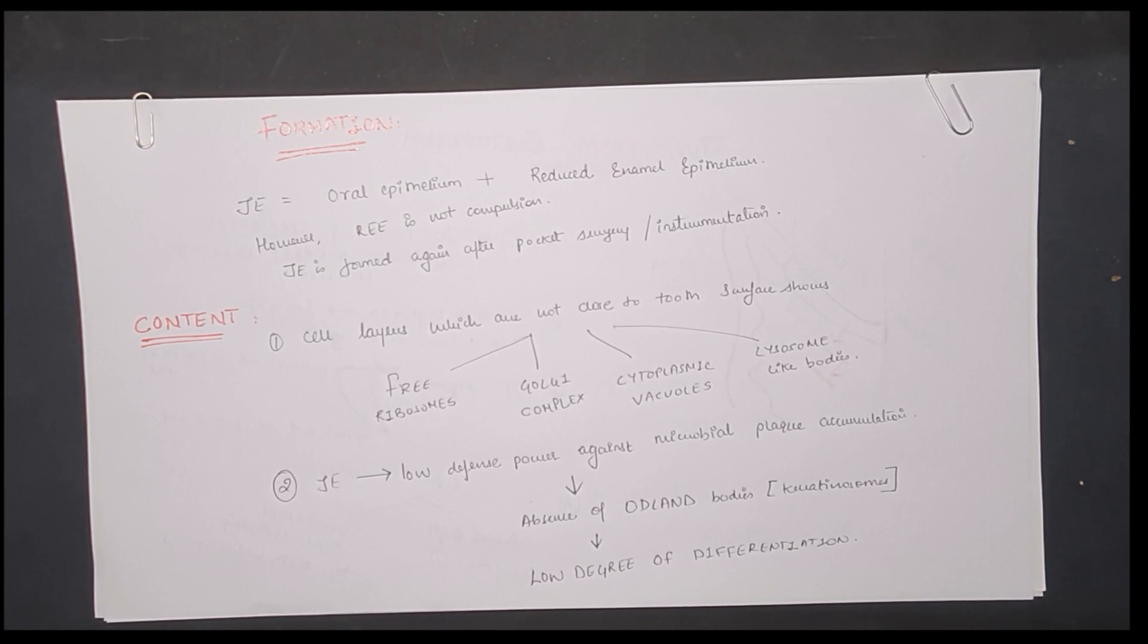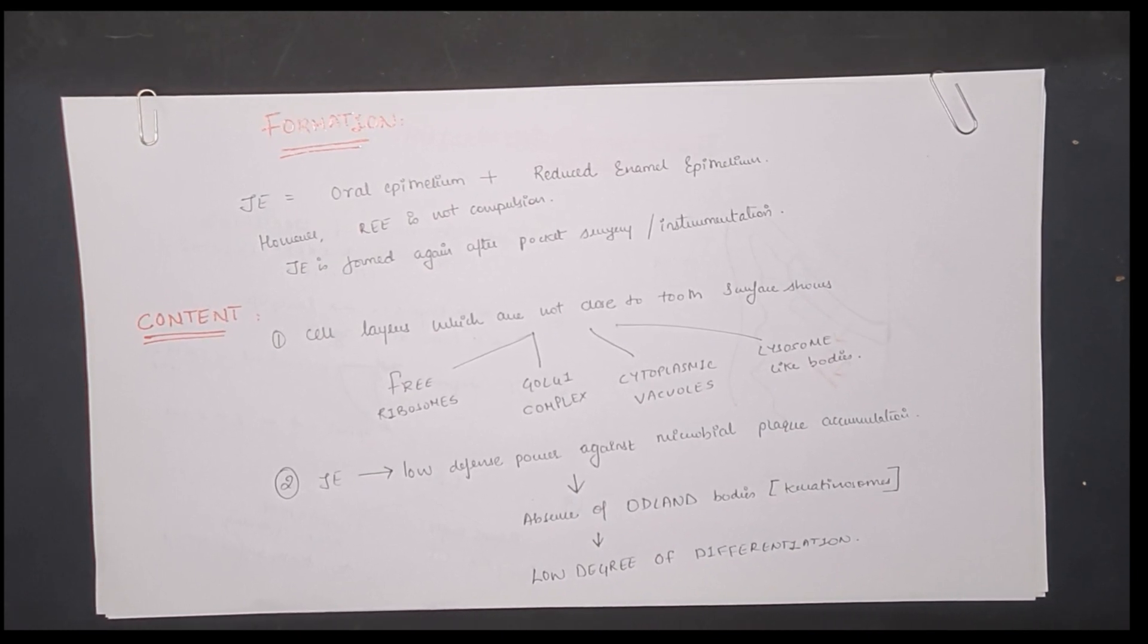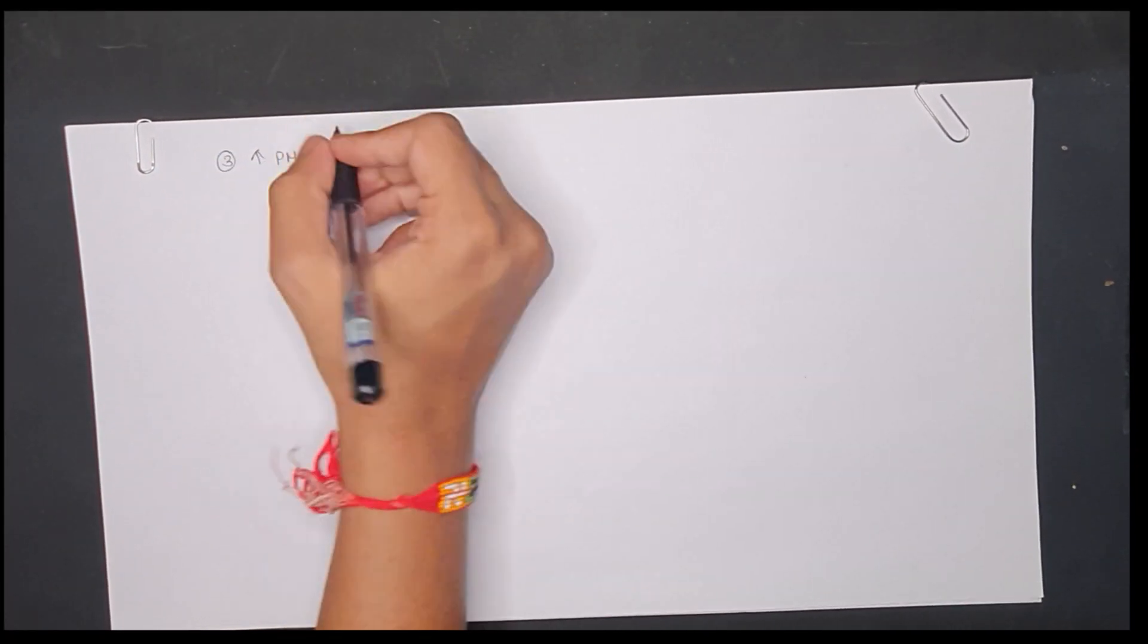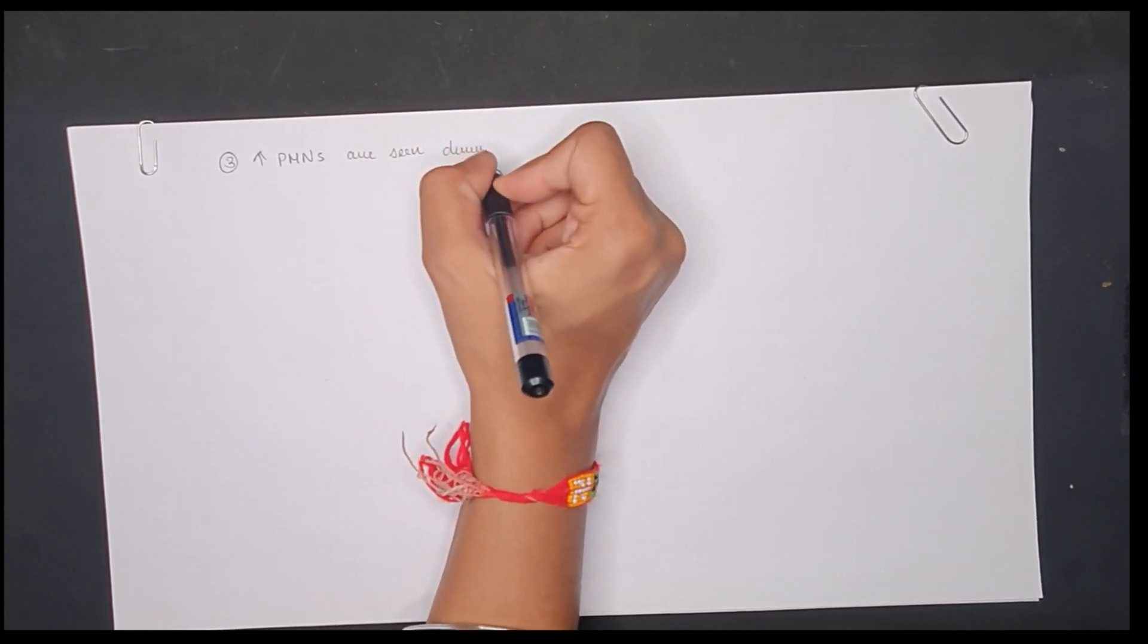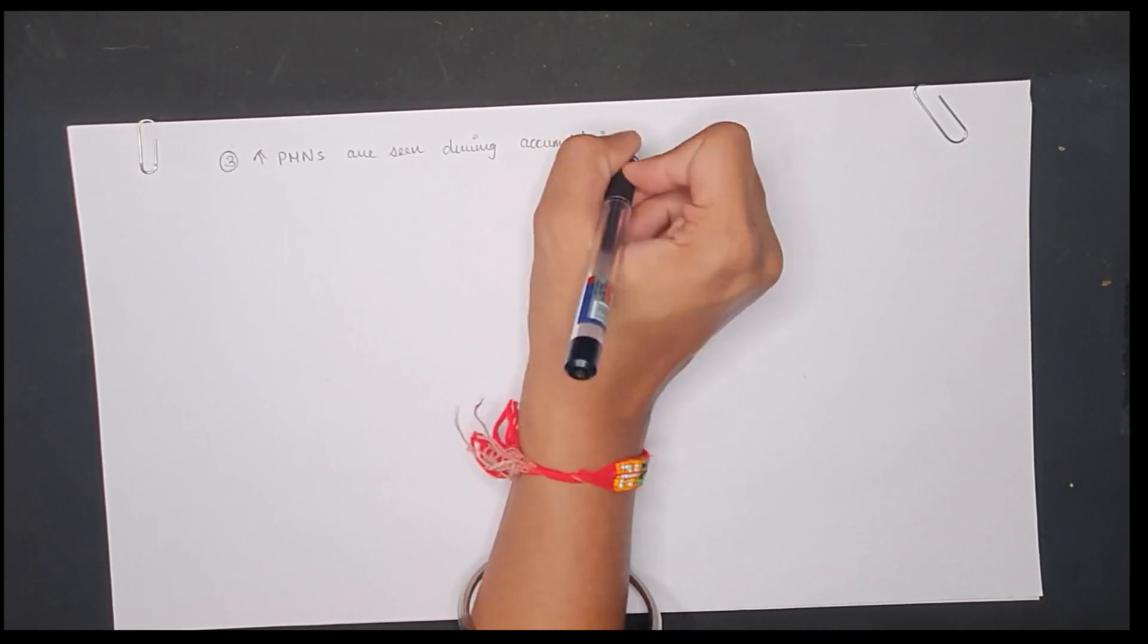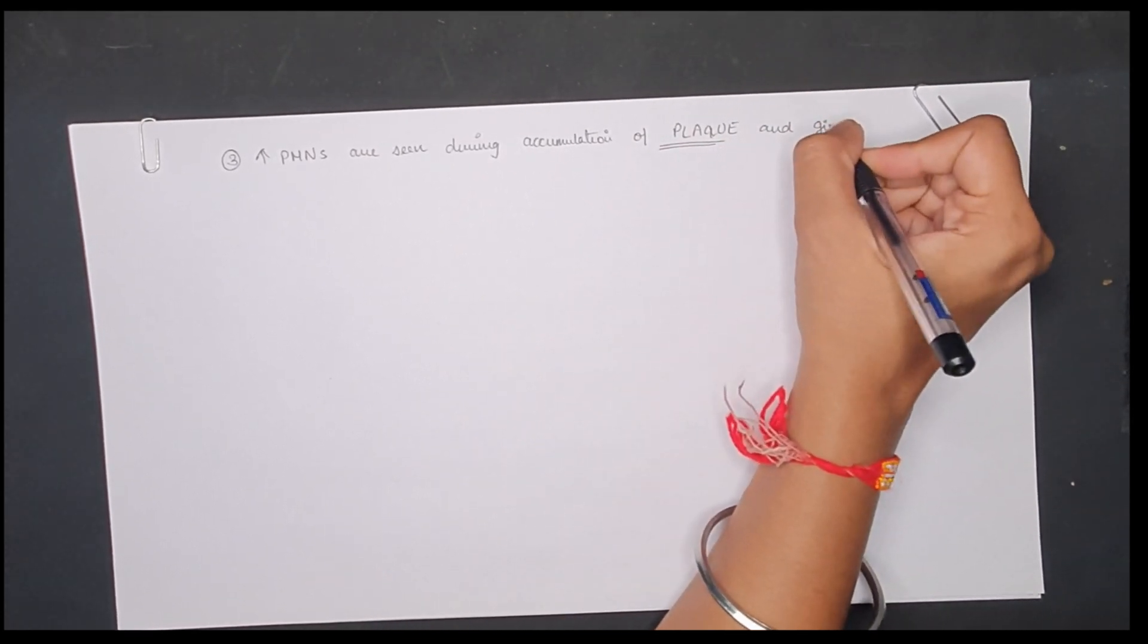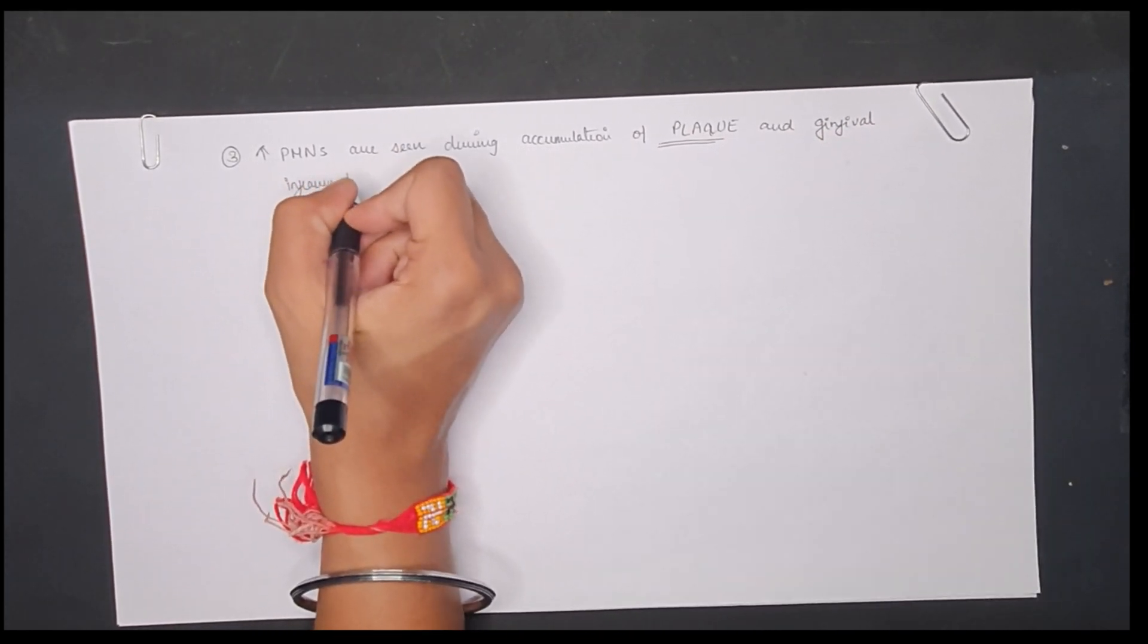This absence contributes to the low degree of defense. The polymorphonuclear leukocytes are increased during the accumulation of dental plaque and during gingival inflammation or due to any trauma.